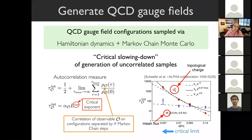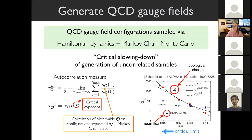You can measure the integrated autocorrelation time, given by a formula where row is the correlation of some observable computed on configurations separated by tau Markov chain steps. As you can see in this figure, as you approach the critical limit and the lattice spacing becomes small, this autocorrelation time—a measure of cost—grows and diverges on a log scale. This is a key barrier towards doing precise first-principles calculations for nuclear physics.